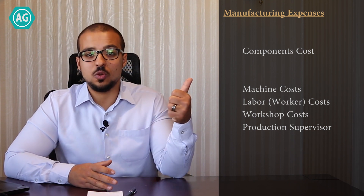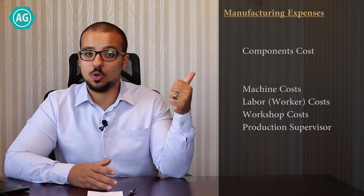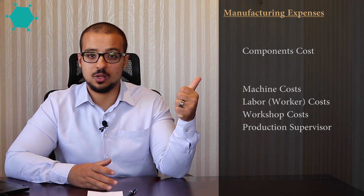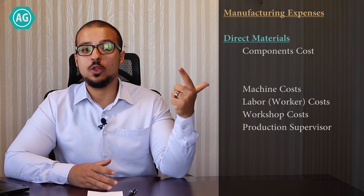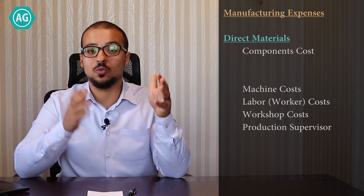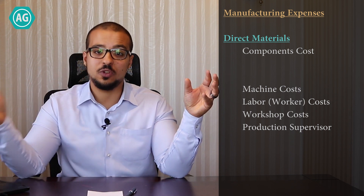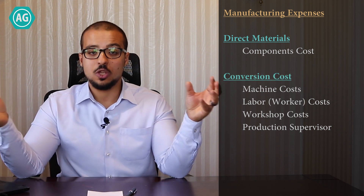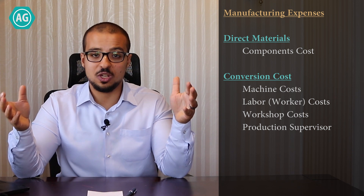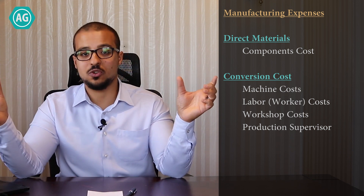So what manufacturing expenses do we have in our factory? We have the cost of the components — the wood and the nails that we are going to use to manufacture the chair. And then we have many other expenses that we spend in order to convert the direct materials into our finished product, the chair. So the two main components of manufacturing expenses are direct materials and conversion costs.